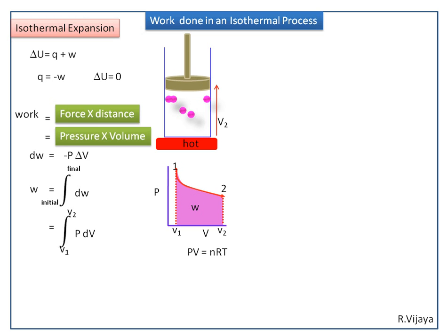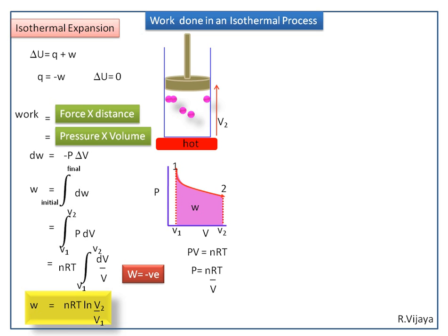For an ideal gas, PV is equal to NRT, so P is equal to NRT divided by V. Substituting this value in the equation, we get W is equal to NRT ln(V2/V1).